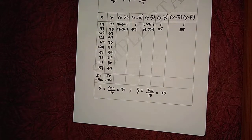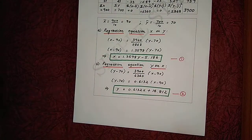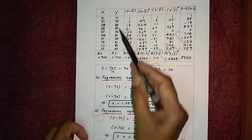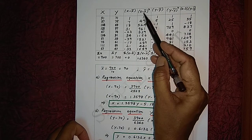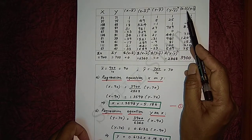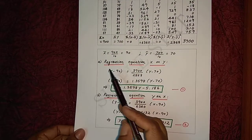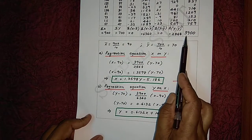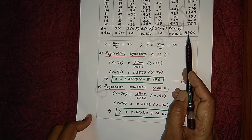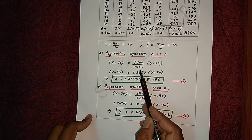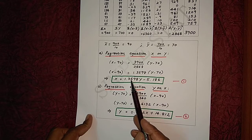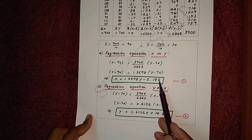Proceeding similarly, we calculate all the values in the table, finding the totals for x, y, (x − x̄), (x − x̄)², (y − ȳ), (y − ȳ)², and (x − x̄)(y − ȳ). Now substituting all these values into the formula for the regression equation x on y, we get: x − x̄ = [Σ(x − x̄)(y − ȳ) / Σ(y − ȳ)²] × (y − ȳ). On simplifying, we get x = 1.3598y − 5.186 as the regression equation x on y. Note this as equation number 1.